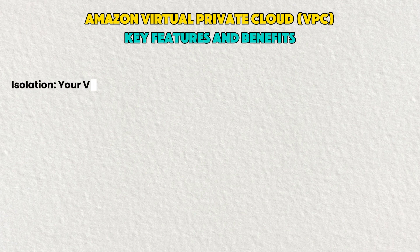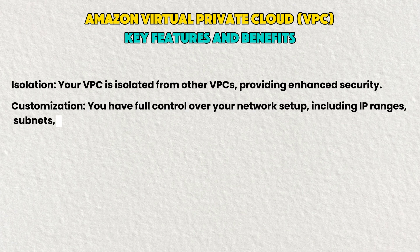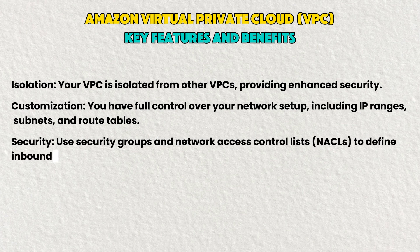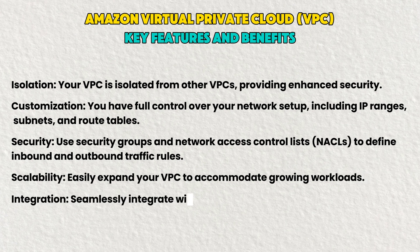The key features and benefits of VPC: first, isolation — your VPC is isolated from other VPCs, providing enhanced security. Second, customization — full control over your network setup including IP ranges, subnets, and routing tables. Using security groups and Network Access Control Lists — NACLs — you can define inbound and outbound traffic rules. Third, scalability — easily expand your VPC to accommodate growing workloads. Fourth, integration — seamlessly connect with AWS services such as EC2, RDS, and S3.